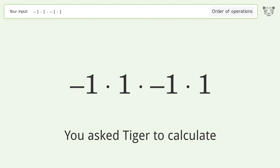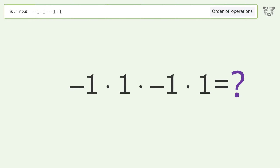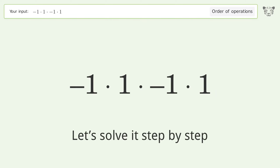You asked Tiger to calculate. This deals with the order of operations. The final result is one. Let's solve it step by step.